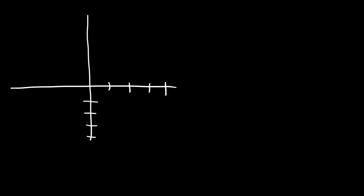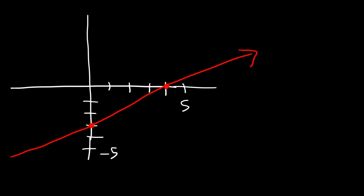Let's start with a graph. Based on this graph, what are the x and y-intercepts? The x-intercept is basically the x-value where the graph touches the x-axis, and it touches it at an x-value of 4. So that is the x-intercept. You can write it as x equals 4, or you can write it as an ordered pair, (4, 0).